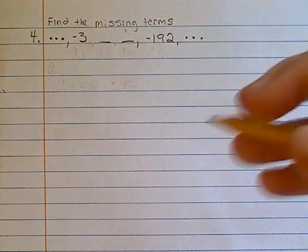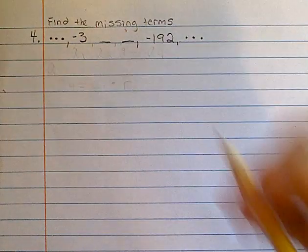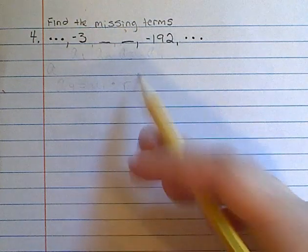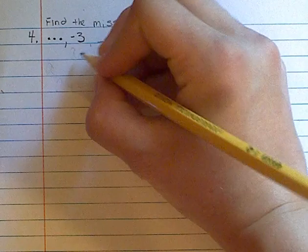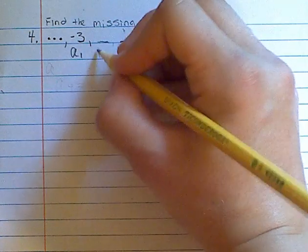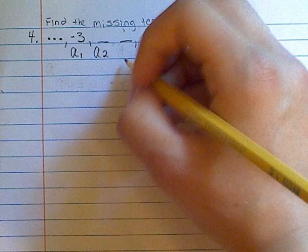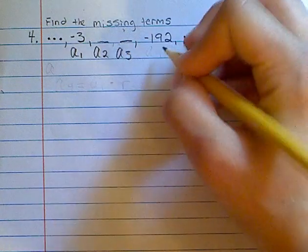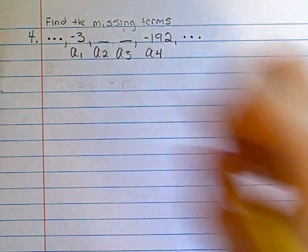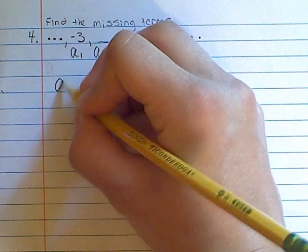For this problem, we have a geometric sequence and we need to find the missing terms between negative 3 and negative 192. Negative 3 will represent a1, this missing term will be a2, the other missing term a3, and negative 192 will be a4.